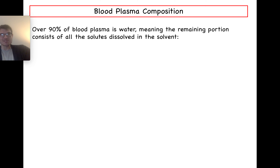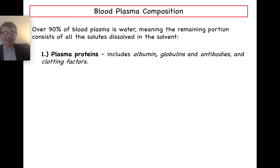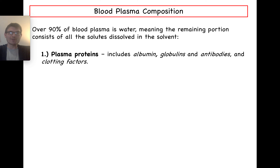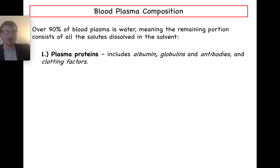Over 90% of the blood plasma is water. The remaining 10% consists of solutes including proteins: carrier proteins like albumins, which distribute and carry insoluble hydrophobic molecules like steroid hormones and lipids throughout the blood; globulins and antibodies, which function in immune defense; and clotting factors, which circulate ready to seal ruptured blood vessels.